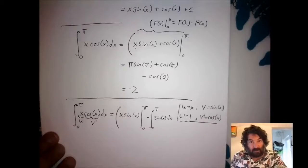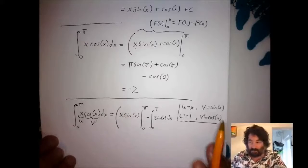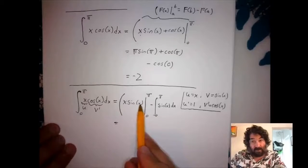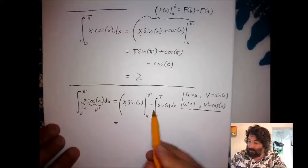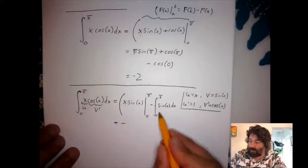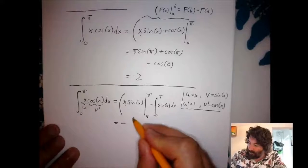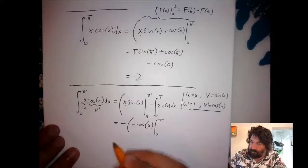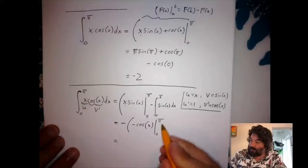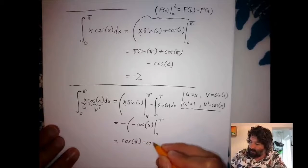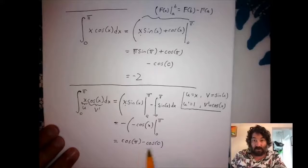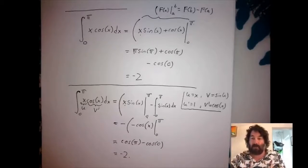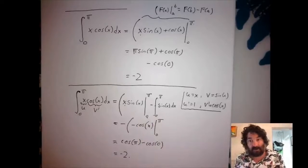Evaluating x·sine x at π gives 0 (since sine π = 0), and at 0 gives 0 (since x = 0). For the remaining integral, the indefinite integral of sine is −cosine, evaluated from 0 to π. The two negatives cancel, giving cosine π minus cosine 0, which is −1 minus 1 = −2. So you can either apply integration by parts to find the indefinite integral first, or evaluate the limits as you go.